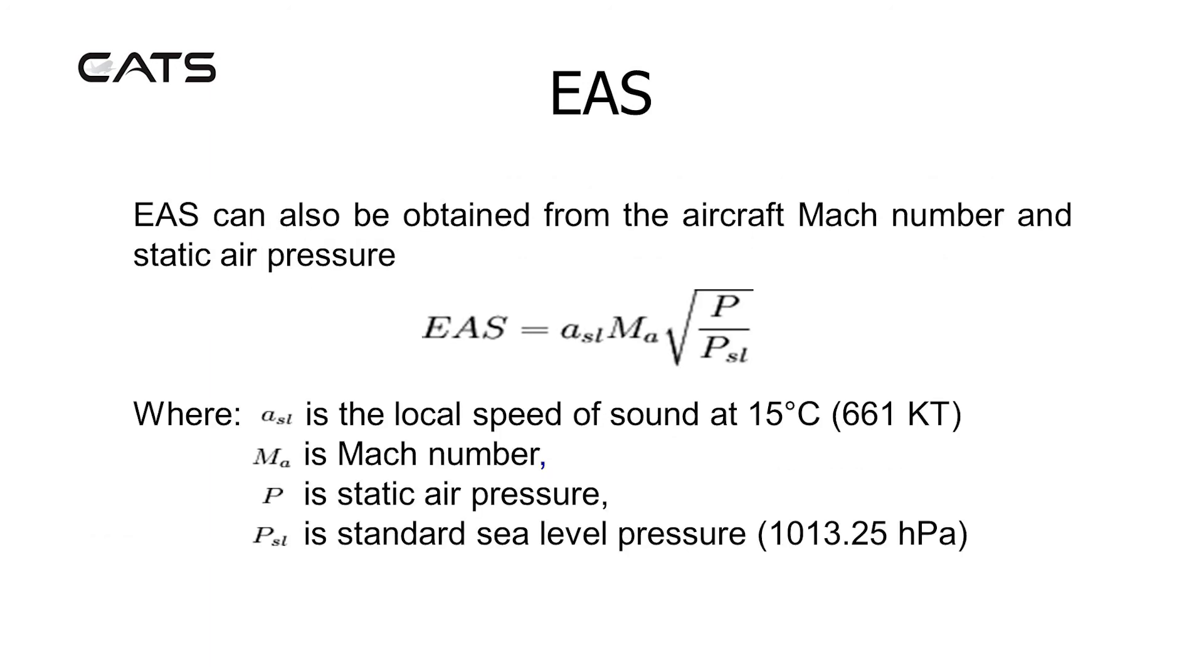Equivalent airspeed can also be obtained from the aircraft Mach number and static air pressure, whereby equivalent airspeed equals the local speed of sound at 15 degrees Celsius, 661 knots, multiplied by the Mach number, multiplied by the square root of the static air pressure divided by the standard sea level pressure, which is 1013.25 hectopascals.